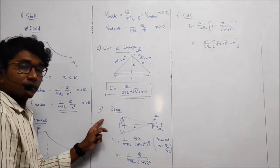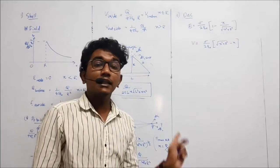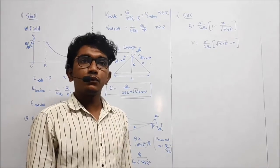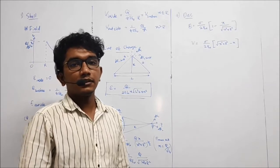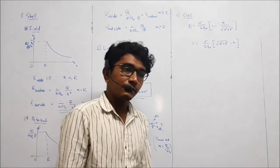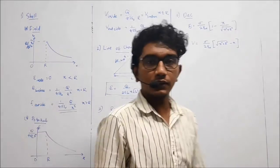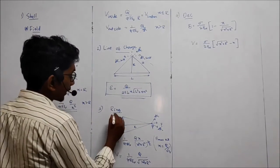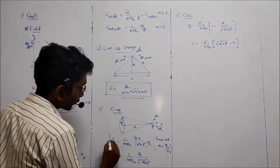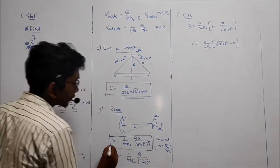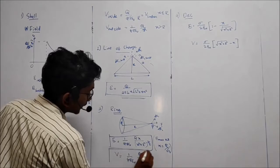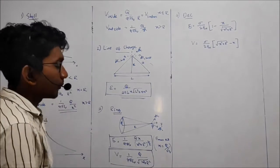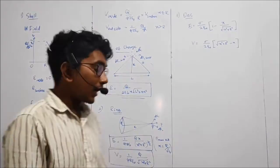Next. I am not doing this. I haven't discussed the ring and all in that. So, ring and all you will have to consider here itself. I mean, we do not need the derivation of all these. So, what about the ring? Ring electric field is equal to 1 by 4 pi epsilon 0 qx divided by x square plus r square the whole is to 3 by 2. And this is equal to, potential is equal to 1 by 4 pi epsilon 0 q by root of x square plus r square.